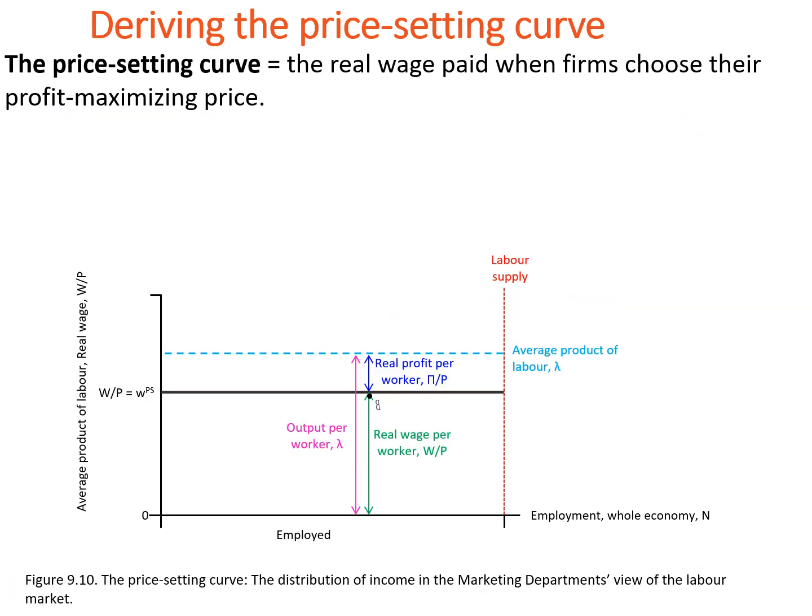Point B on the price setting curve shows the outcome of profit-maximizing price setting behavior of firms for the economy as a whole.